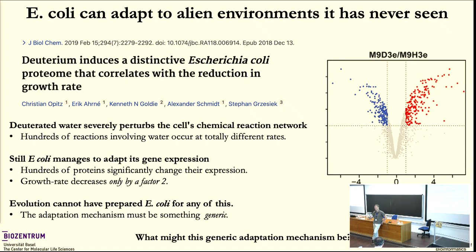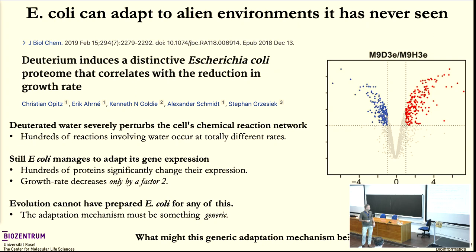What might this generic adaptation mechanism be? I want to go through results from the last 10 years in my lab that I think are bringing together a picture of how this might be working. The first ingredient is that growth rate, through the effects of dilution, sets the sensitivity of regulatory switches.